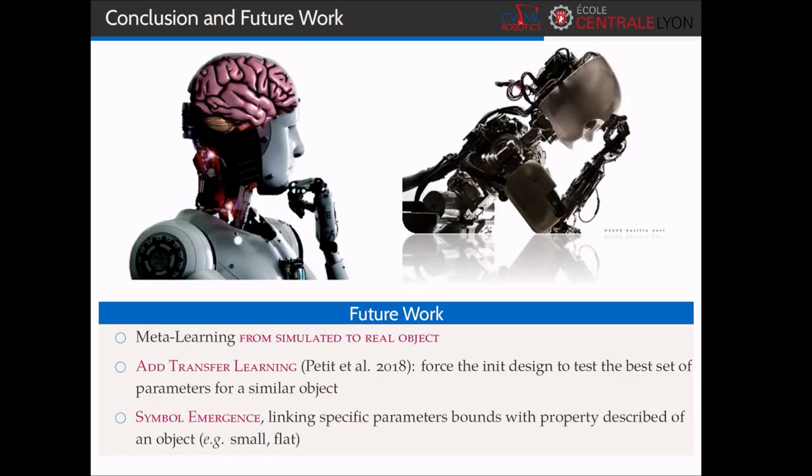For future work, one of our leads is to use this meta-learning approach, using a simulated object for initial optimization, and apply it when confronted to the same object, but in reality. We also plan to merge this meta-learning strategy with a transfer learning method that we developed before. It consists in forcing the robot to test initially the optimized set of parameters found for a similar object. We expect additional gains in performance by merging both of these methods.